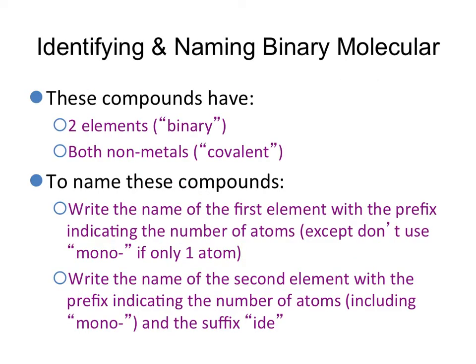You'll find that naming binary molecular compounds is a lot easier than naming ionic compounds. These compounds have two elements, and both are non-metals. To name these compounds, you're going to look at the first non-metal. You're going to write the name of that non-metal with a prefix indicating the number of atoms.